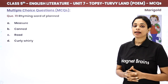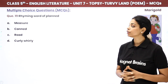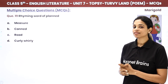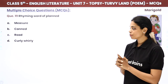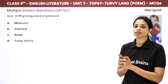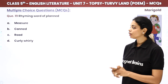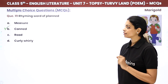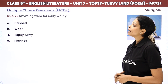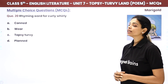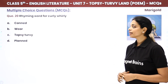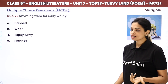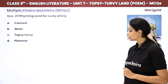Rhyming word of 'planned' — what is the rhyming word for 'planned'? Planned–measure? No. Planned–canned? Yes! Planned–road? No. Planned–curly-wurly? No. The answer is planned and canned rhyme. Next, the rhyming word for 'curly-wurly' — what rhymes with curly-wurly? Where? Topsy-turvy, planned? Of course, it is topsy-turvy.